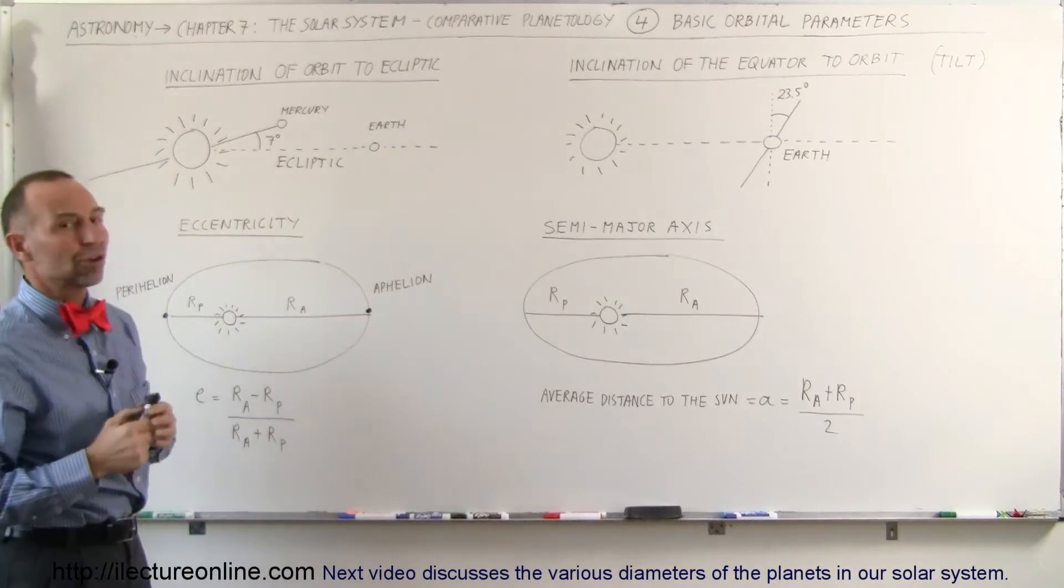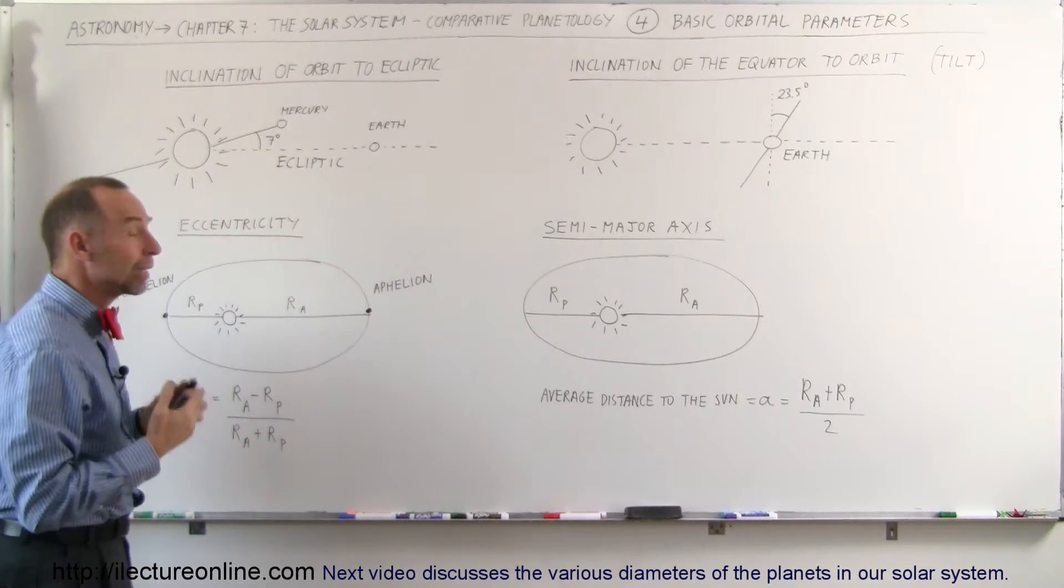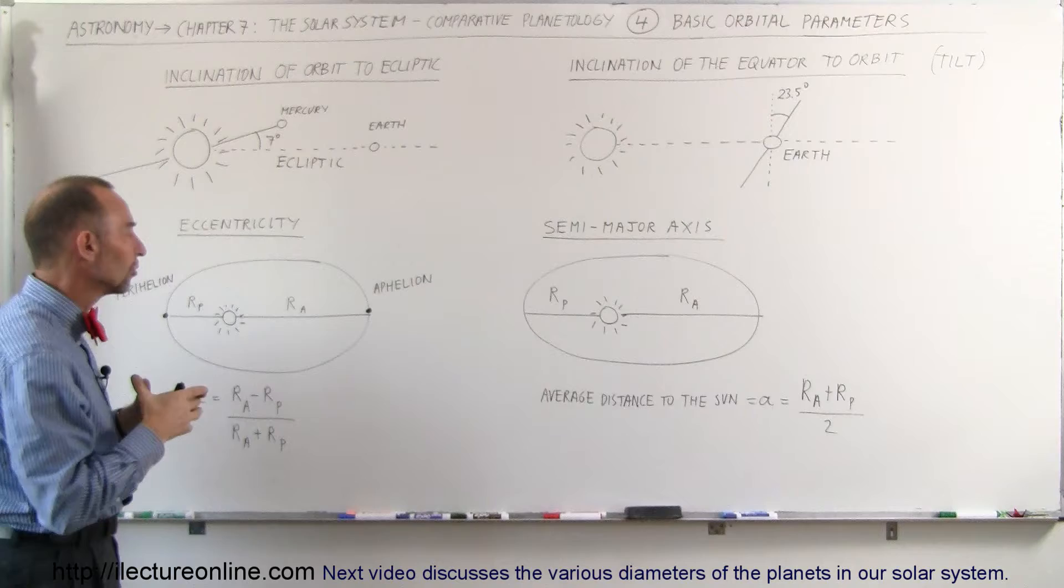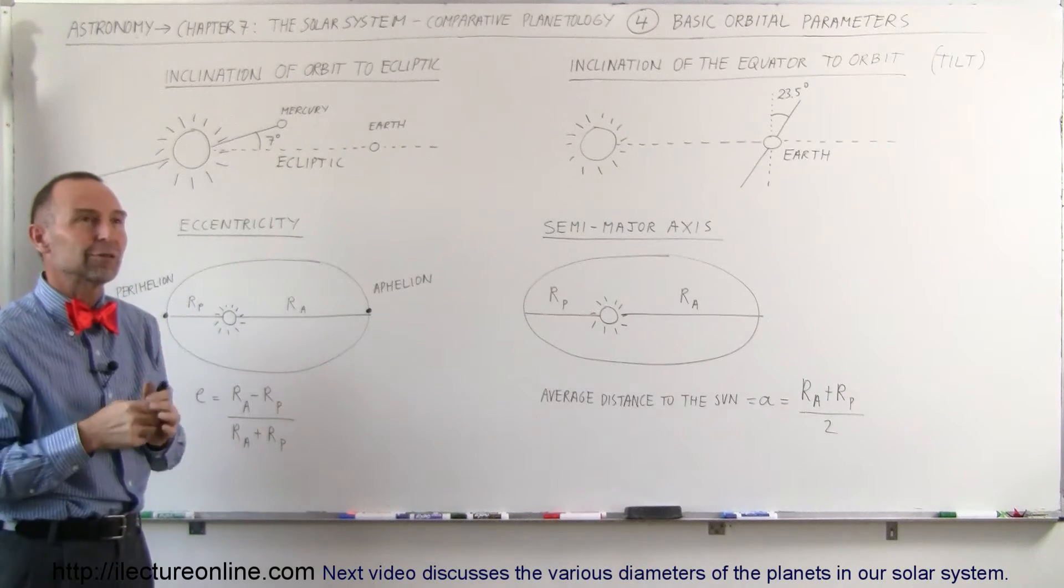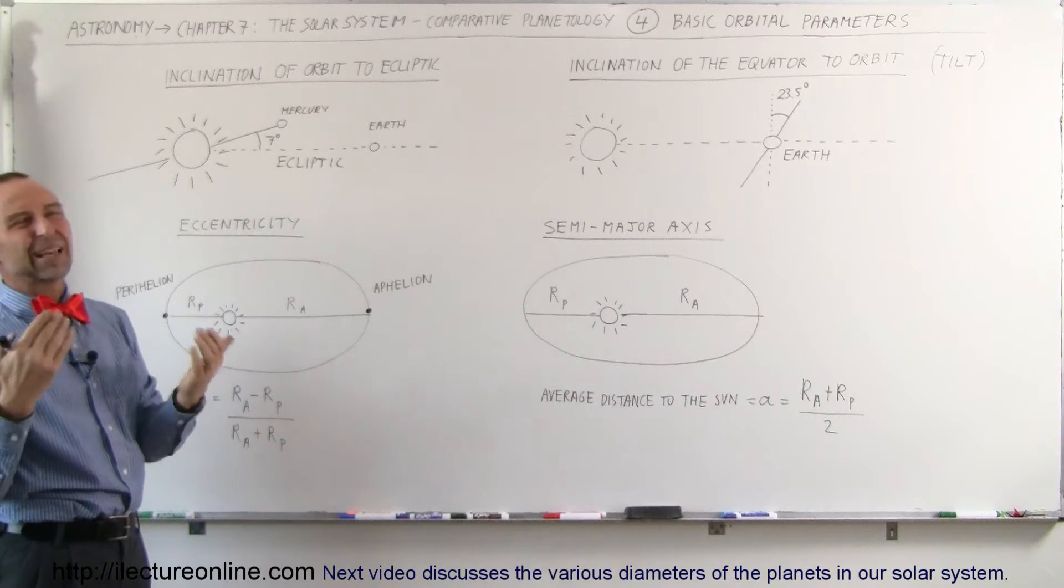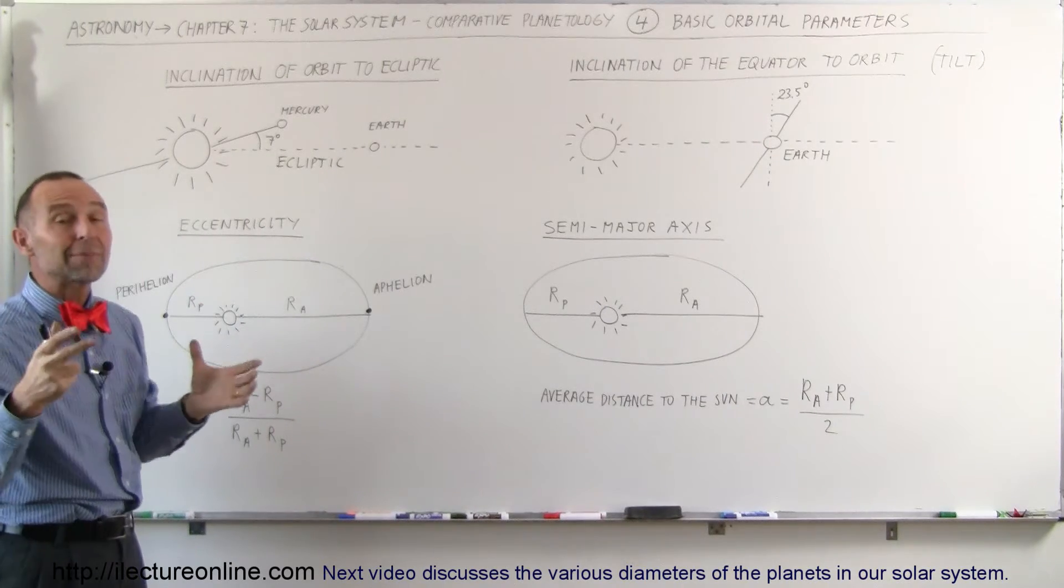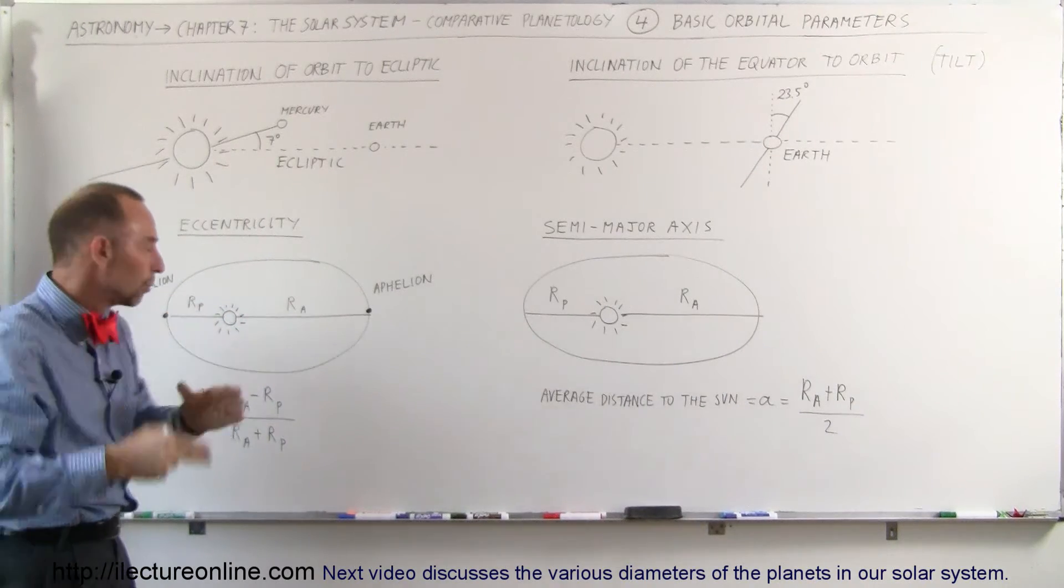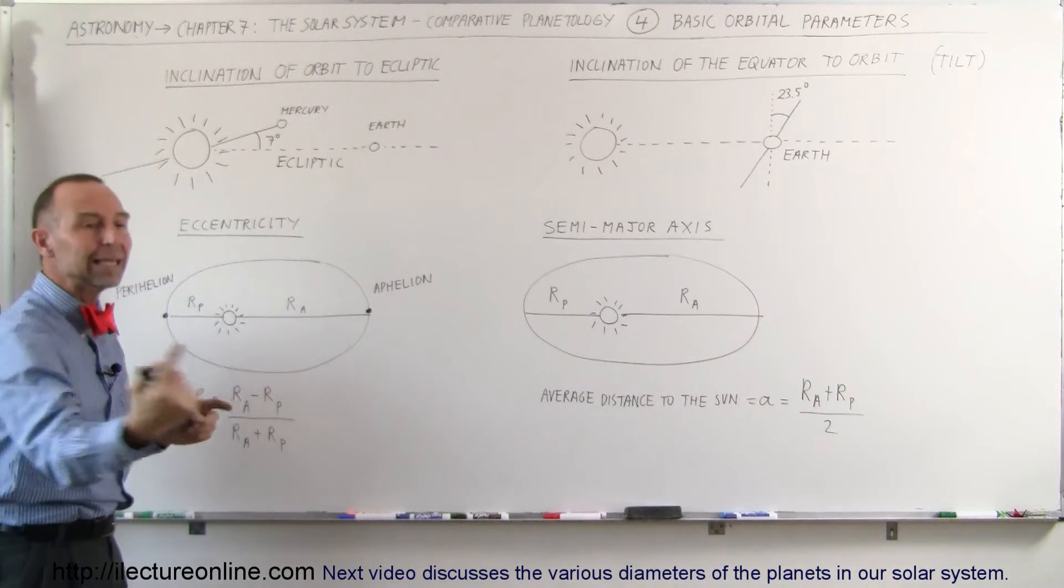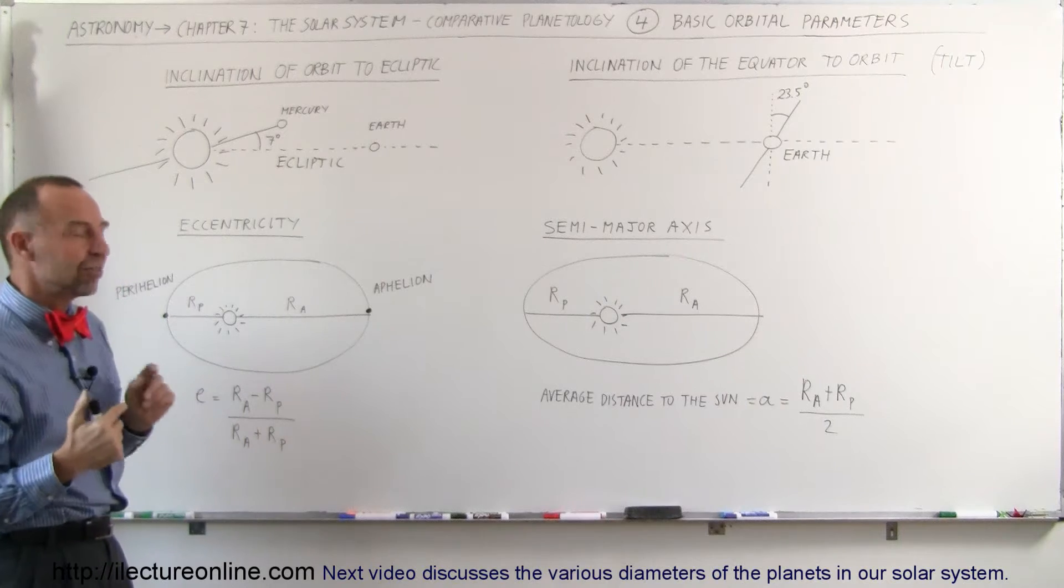Then we have what we call eccentricity. We learned through Kepler that the planets have elliptical orbits rather than circular orbits. And so the amount of that eccentricity, the closer it is to the circular orbit, the smaller the ellipticity. The more it's elongated into an elliptical orbit, the greater the eccentricity.